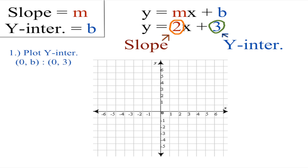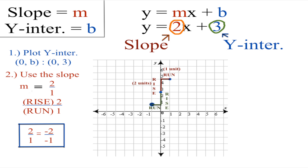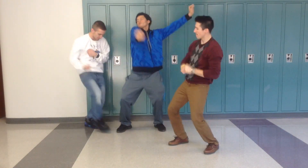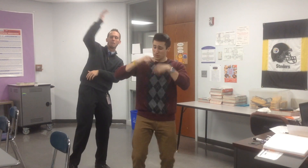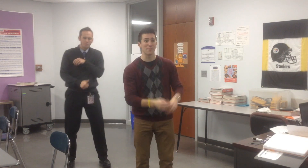Now let's graph it. Plot the y-intercept, yeah. Find the next 2 points using the slope — rise over run. I'm like yeah, slope's fine. Positive slope, incline. Slope rises up — press rewind to see that slope one more time.